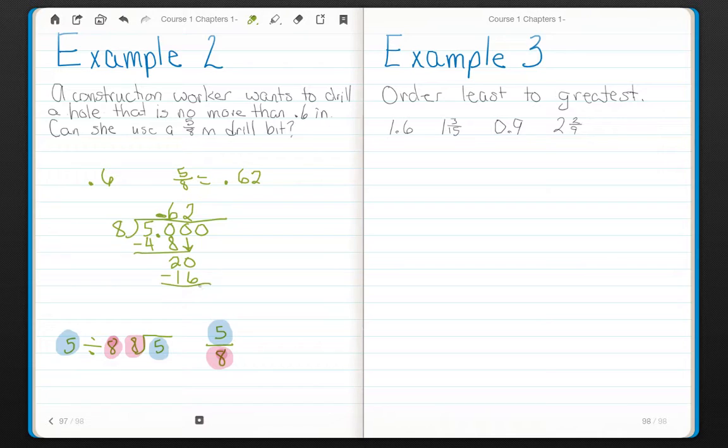If we actually continue this, 5 eighths is 0.625 inches. Well, 0.625 is larger than 0.6. So, no. She cannot use a 5 eighths inch drill bit. It will be too large. So make sure you convert those fractions. The main one to remember is that your numerator goes inside the division symbol. It is your dividend. Your denominator goes outside. It is your divisor.